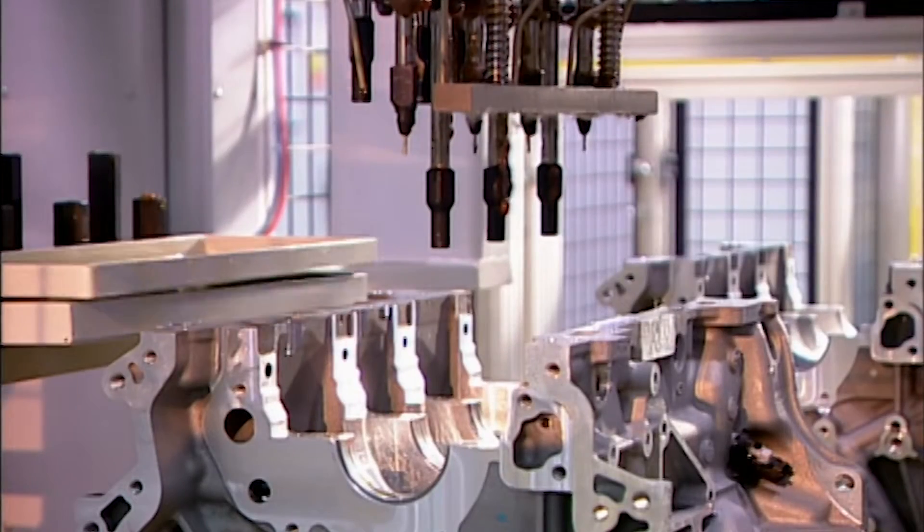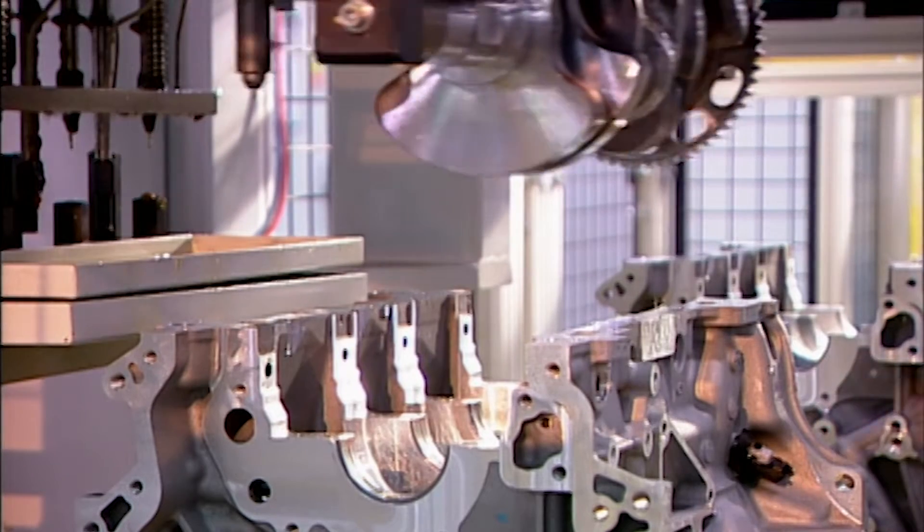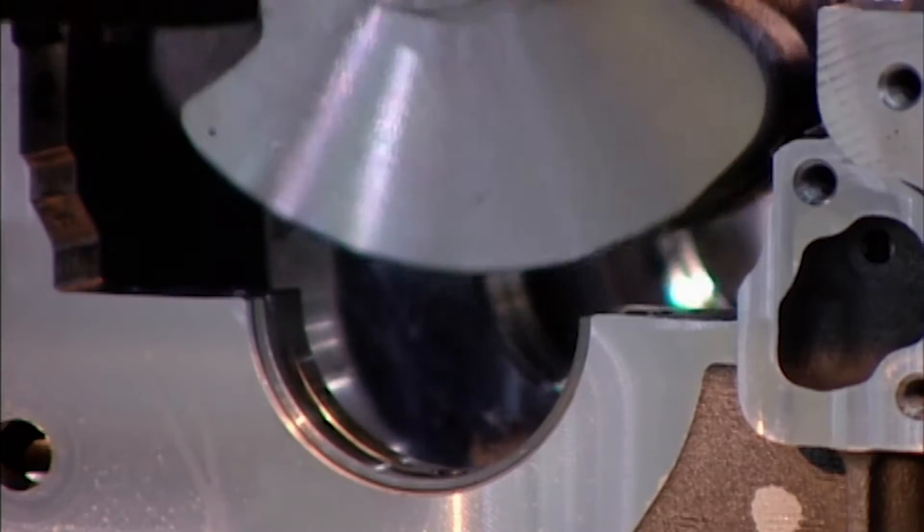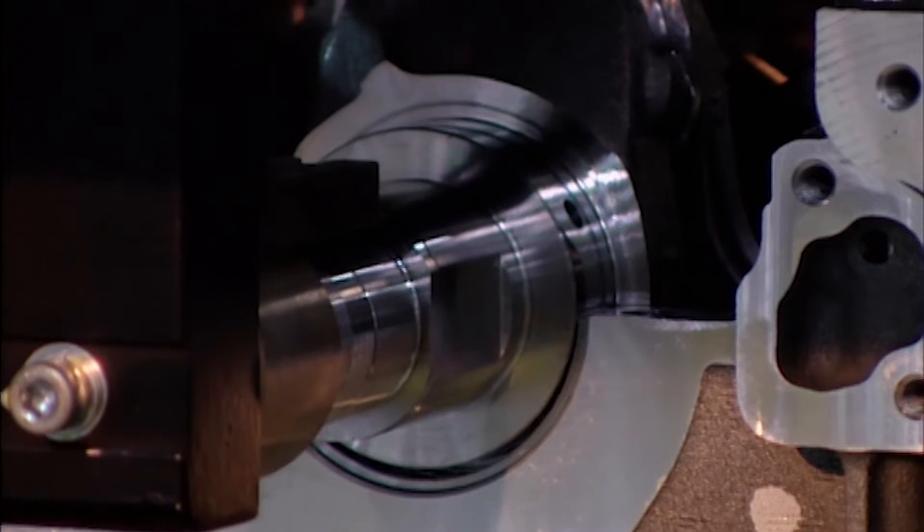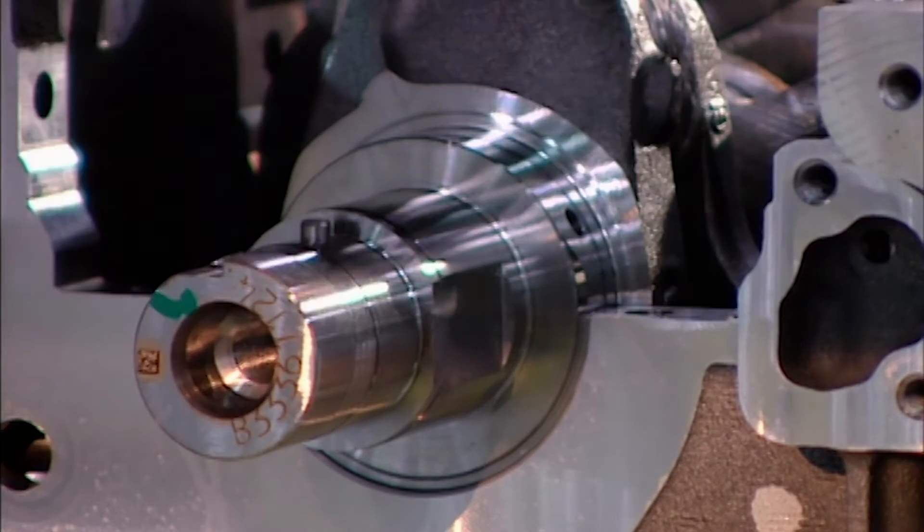Back on the engine assembly line, the engine blocks are still upside down. A robot lubricates the four bearings on which the crankshaft will turn. Then it drops the crankshaft into position.